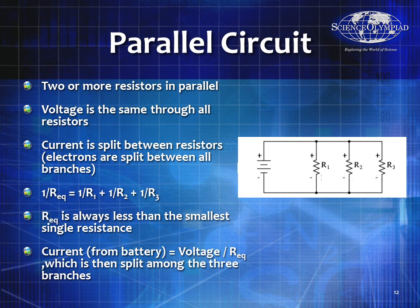R equivalent in a parallel circuit is always going to be less than the smallest single resistance — electrons always take the path of least resistance. So if you have 1 megaohm, 1 ohm, and 5 ohms in parallel, the R equivalent had better be less than 1 ohm. Almost all the current will go through the smallest resistor. The bigger the resistance, the less the current. The current from the battery equals voltage divided by R equivalent, and if you add up the currents through all three resistors, they equal the current from the battery.